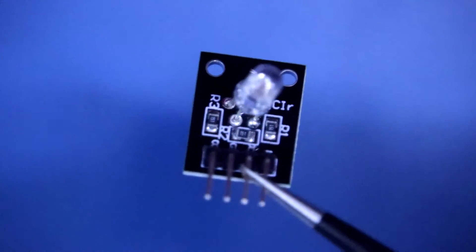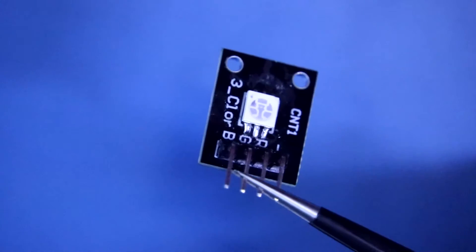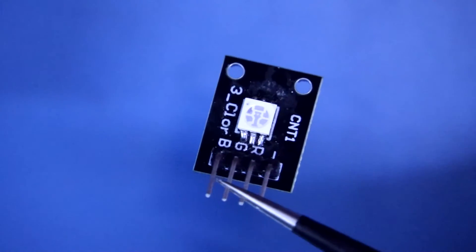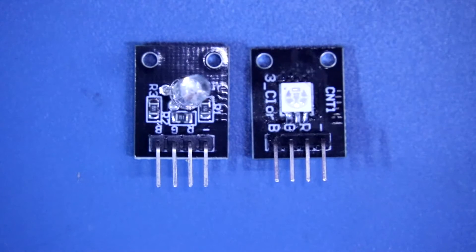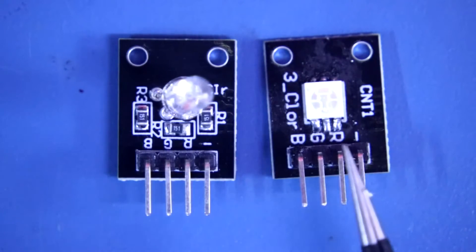Hello guys, in this video we are going to see KY016 and KY009. These both are RGB LED modules. This is a 5mm RGB LED and this is SMD.